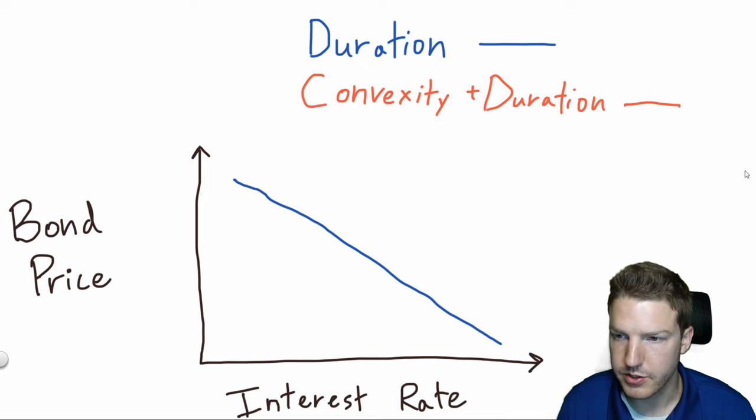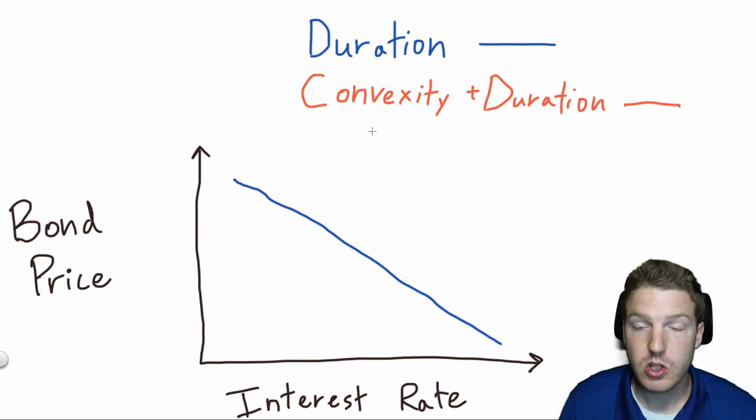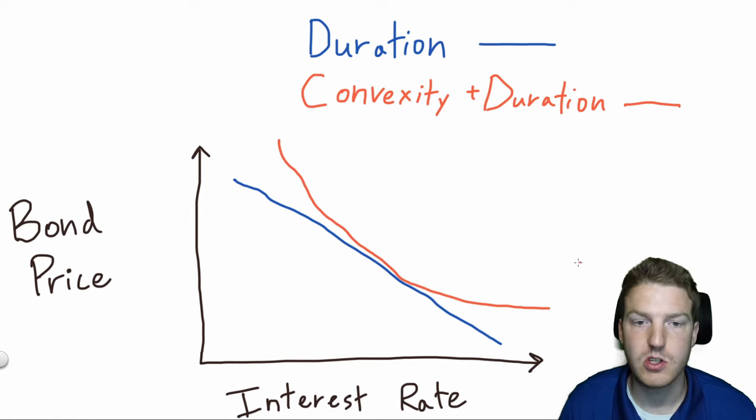I kind of am terrible at drawing straight lines, so cut me some slack. But if we include convexity and duration, we find this curved effect, and this is actually closer to the true approximation of the change in bond's price with changes in interest rates.